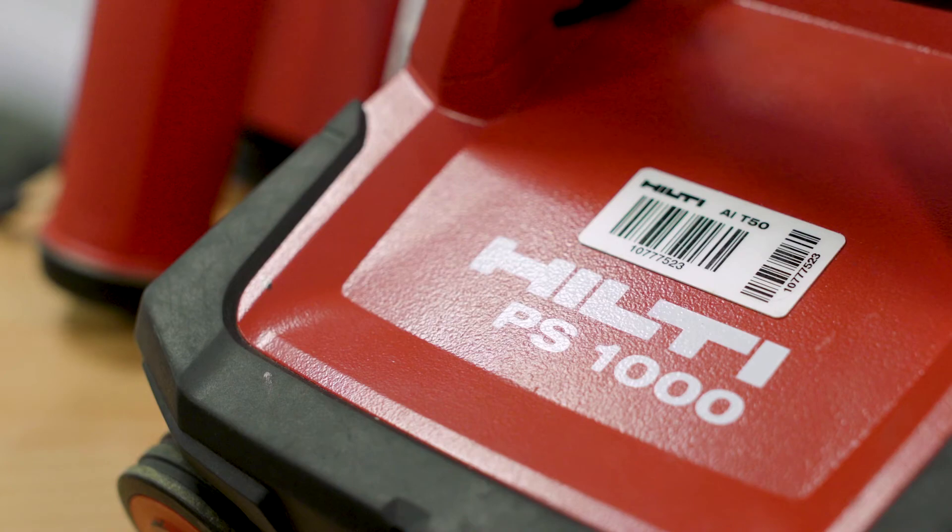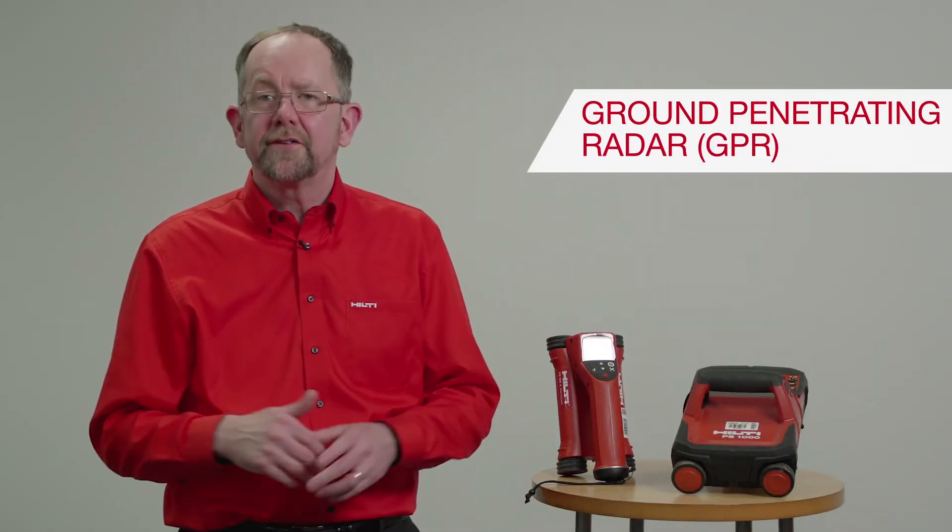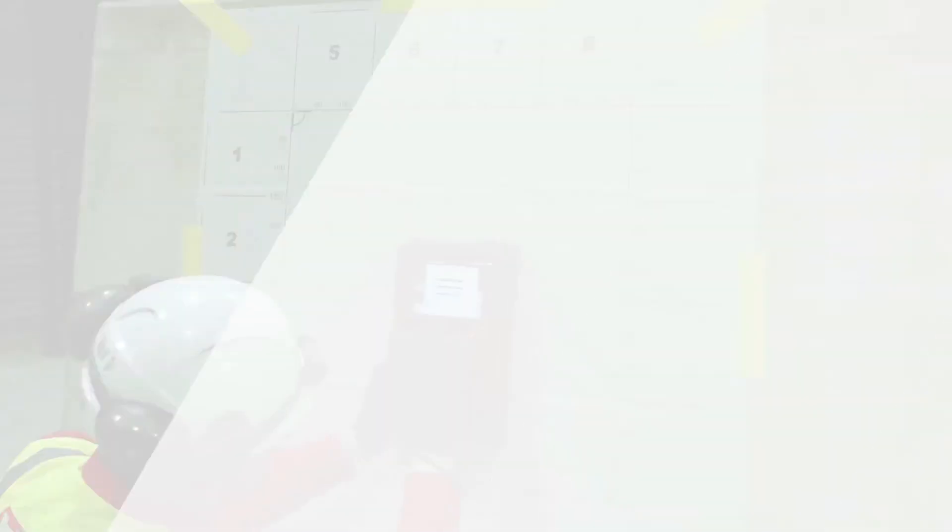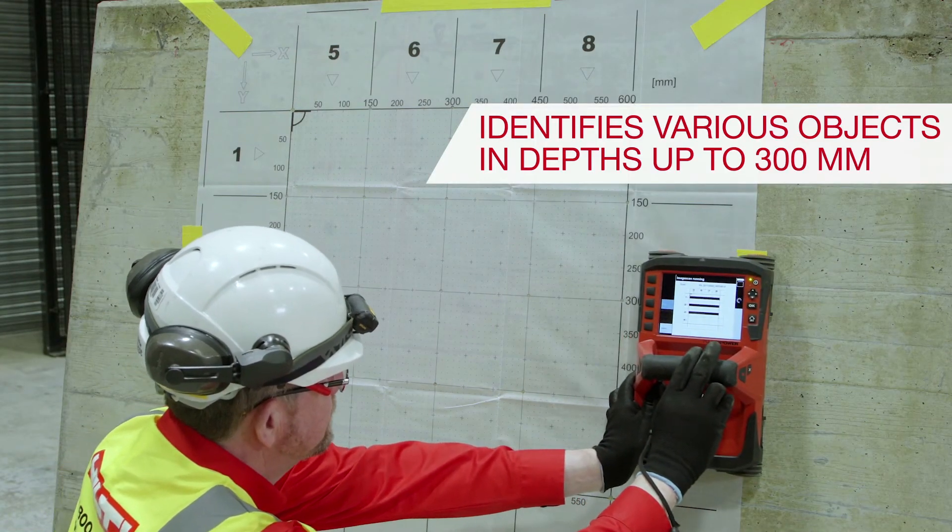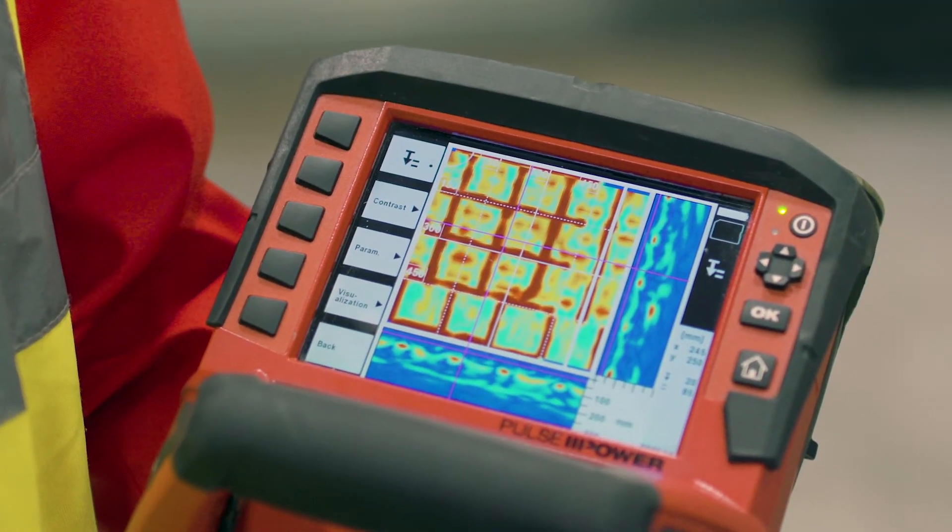The Hilti PS 1000 system operates on ground penetrating radar or GPR technology. This tool is ideal for localizing multiple object types at depths of up to 300 millimeters in reinforced concrete and other base materials.